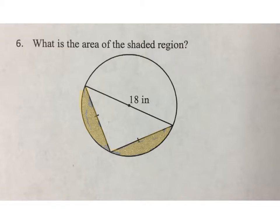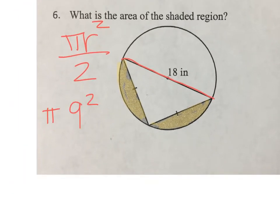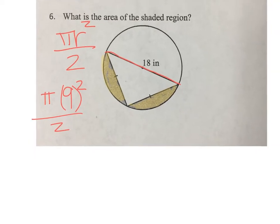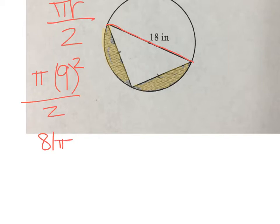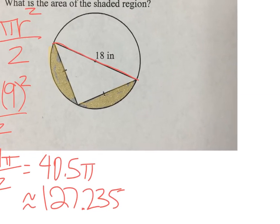First we need to start with our circle. This is a diameter; the diameter cuts our circle in half, so the area of the whole thing is πr² divided by 2, which has a radius of 9 since the diameter is 18. That's half of 81. 81π divided by 2 is 40.5π, which is approximately 127.235 for the entire half circle area.